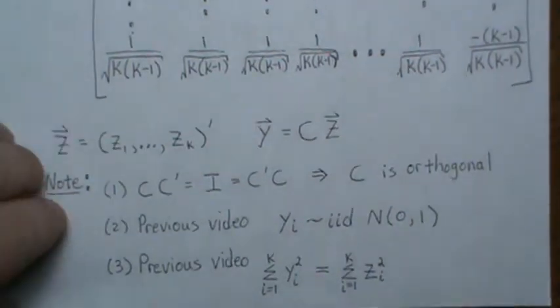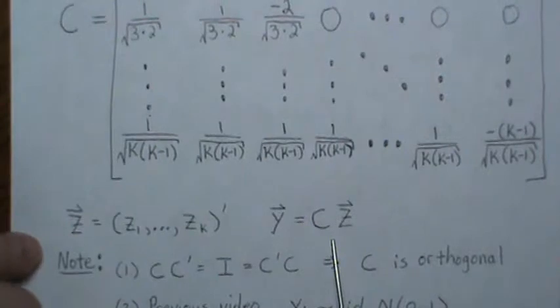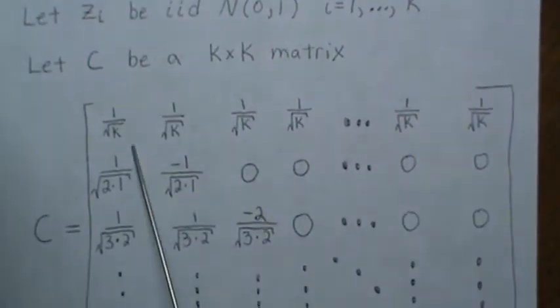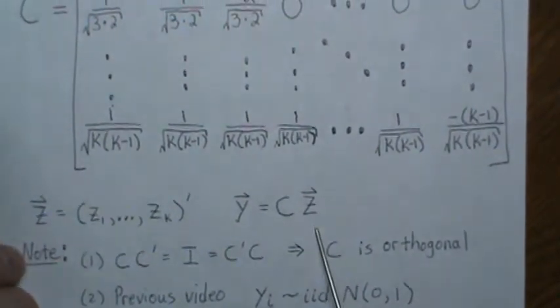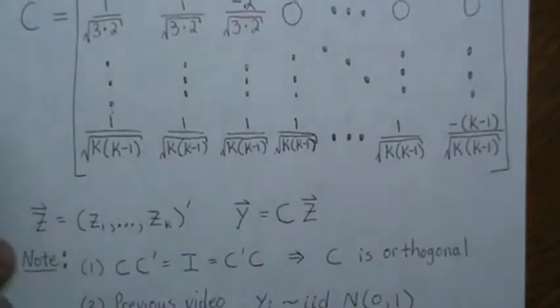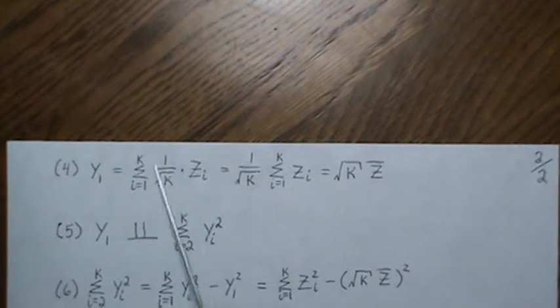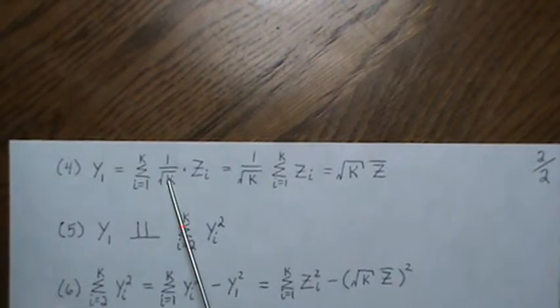Our goal is to show that the sample mean and variance are independent. Let's look at y₁, the first element of y. Taking the first row of C times the vector z — since all first-row entries are 1/√k — we get y₁ = (Σzᵢ)/√k. So the first element y₁ is the sum of the zᵢ's times 1/√k.